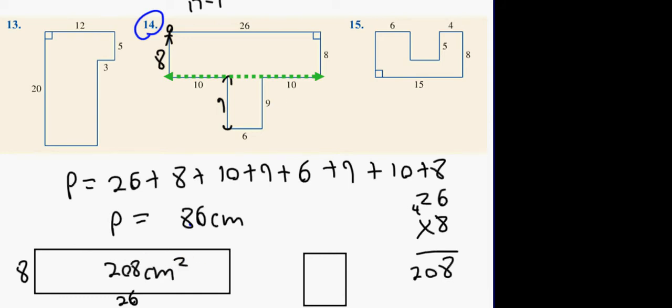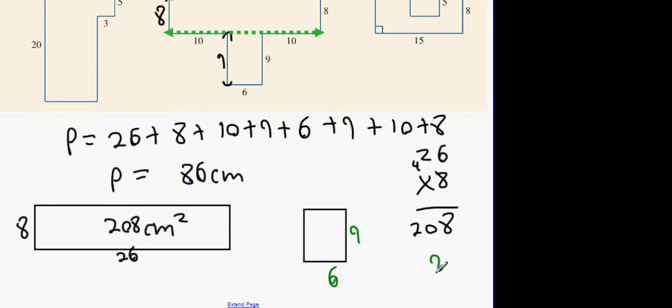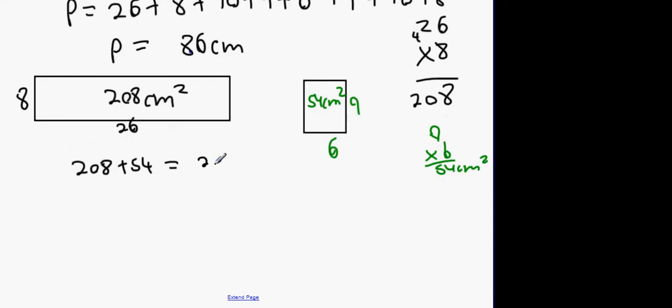Now what about the smaller one? 9 by 6. Which gets me 54. 54 centimeters squared. Now we're going to add them both together. What happens then? 208 plus 54. 262. 262 centimeters squared.